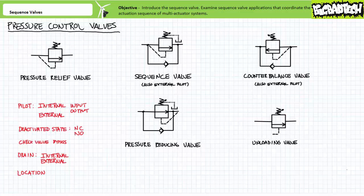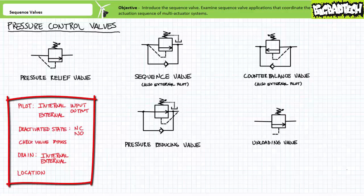When first introduced to this family in mass, you'll note they're hard to differentiate from one another. However, if you know what characteristics to look for, they're easy to distinguish and identify. The characteristics I use to classify them are as follows: pilot line, deactivated state, whether the valve has a check valve bypass or not, whether the drain is internal or external, and finally location and perceived function.